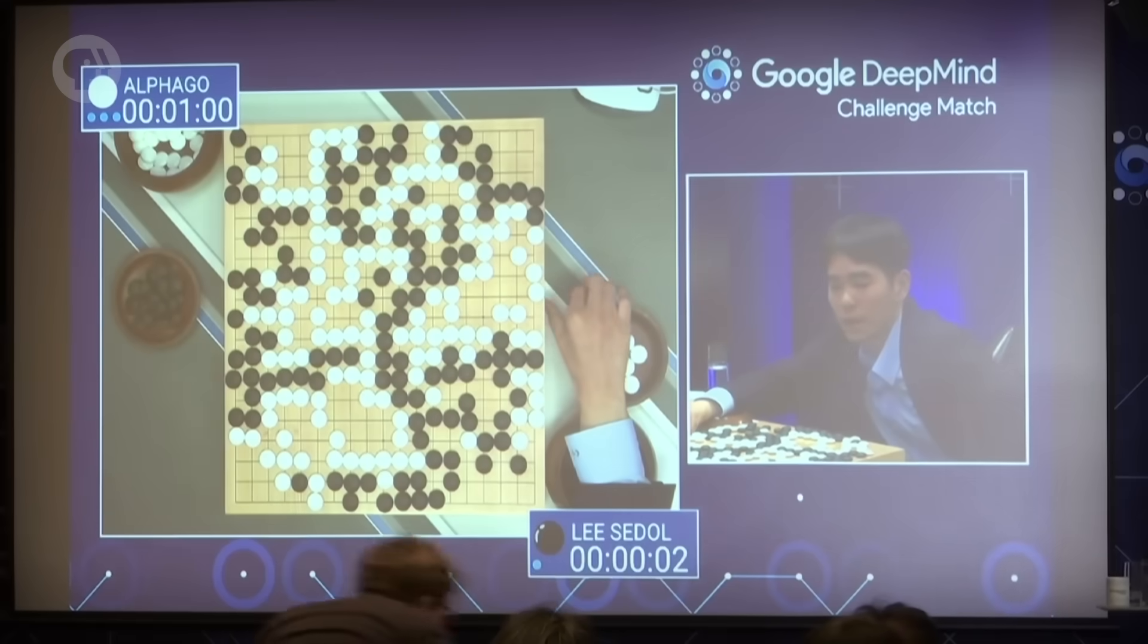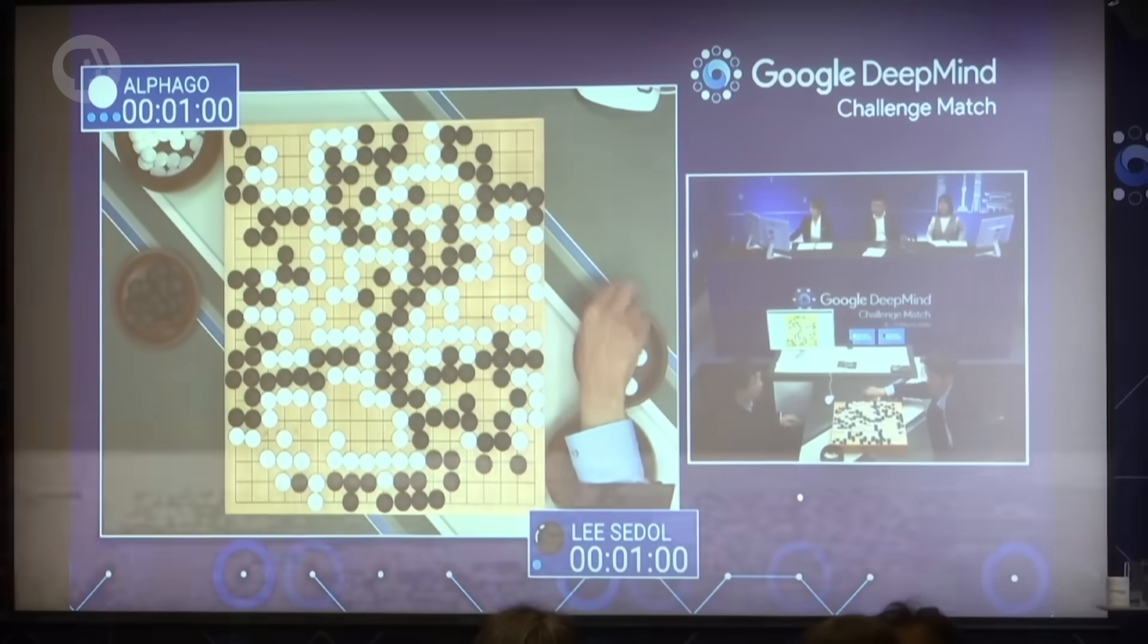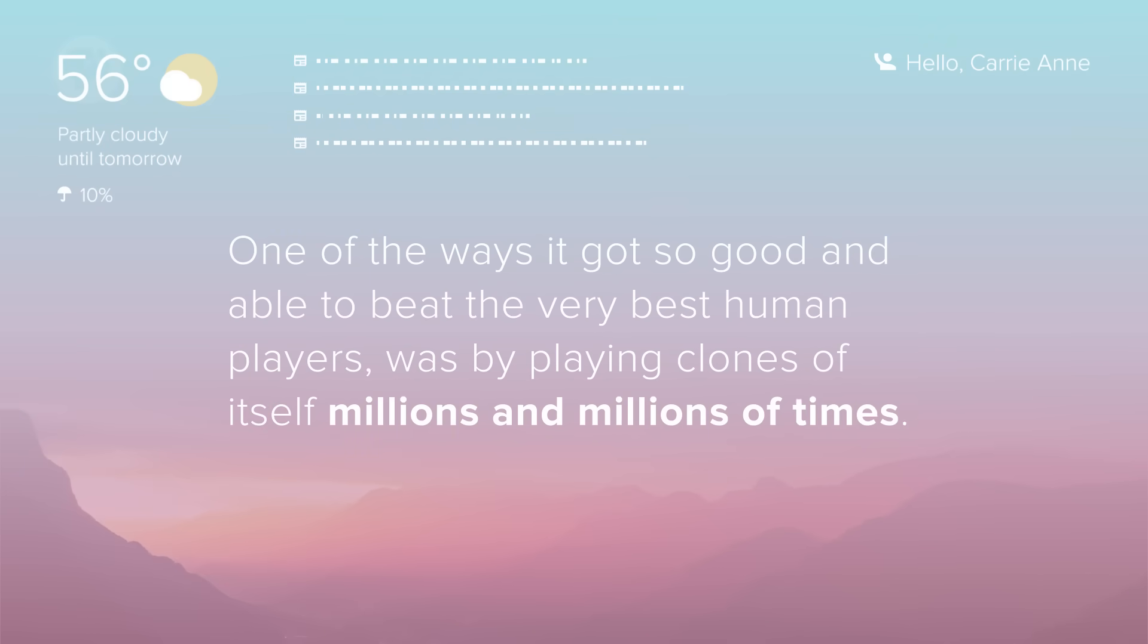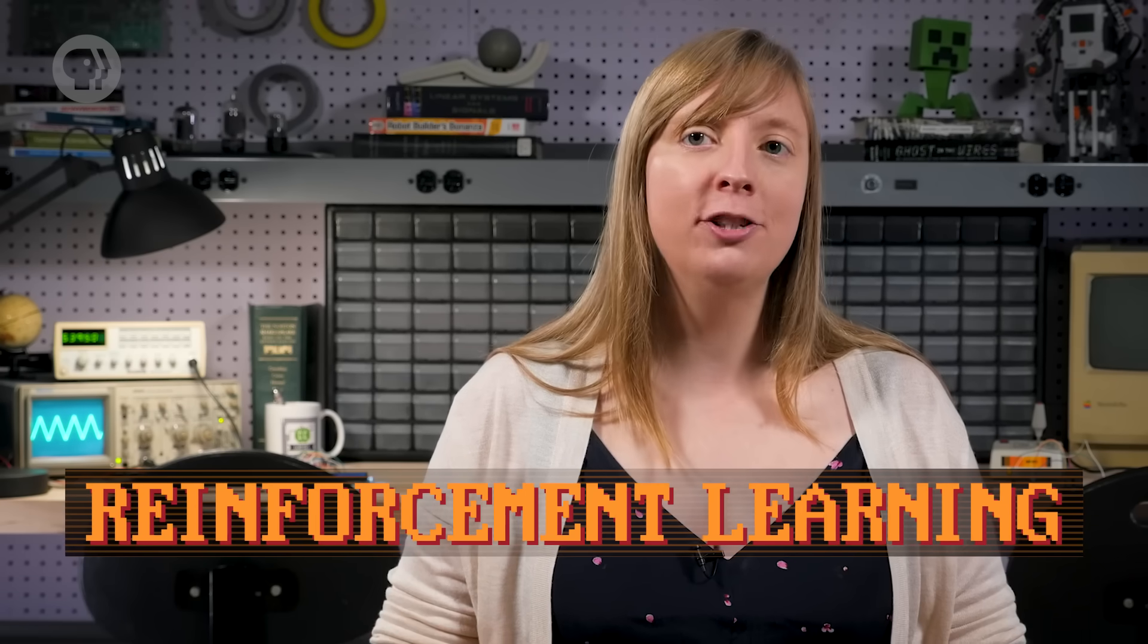Not only can AIs gobble up huge volumes of information, but they can also learn over time, often much faster than humans. In 2016, Google debuted AlphaGo, a narrow AI that plays the fiendishly complicated board game Go. One of the ways it got so good and able to beat the very best human players was by playing clones of itself millions and millions of times. It learned what worked and what didn't, and along the way discovered successful strategies all by itself. This is called reinforcement learning, and it's a super powerful approach.